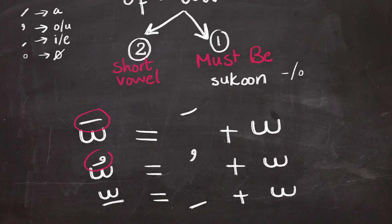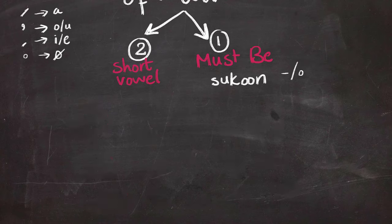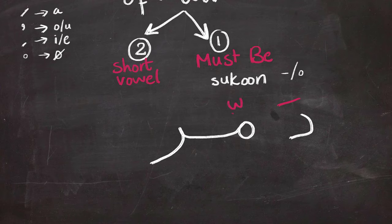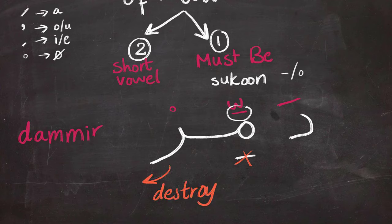And in case of kasra, we're going to put the kasra under the shedda, not under the letter, which will give the same effect. So how does this look in a real example? A word that is made up of dal-meem-ra should be dammir, dammir. The kasra under the meem is not really put under the meem but underneath the shedda. And dammir means destroy.